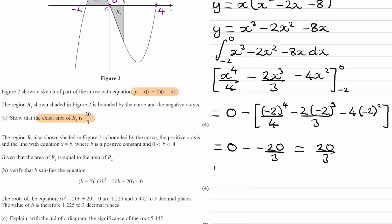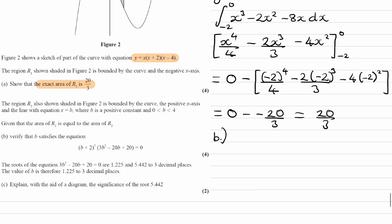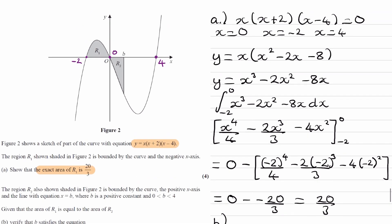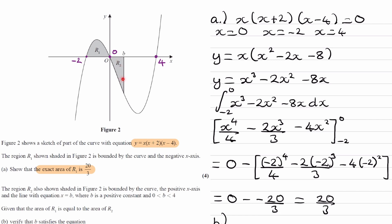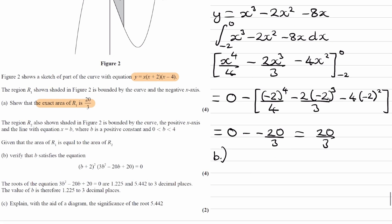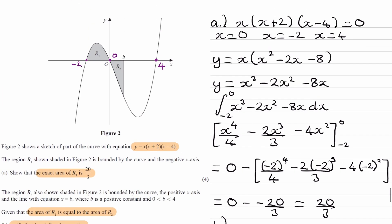Now for part b. The region r2, also shown shaded in figure 2, is bounded by the curve, the positive x-axis, and the line with equation x equals b, where b is a positive constant. We can see that on our diagram, r2 is over here, bounded by the curve, the x-axis, and the line x equals b. We're told the area of r1 equals the area of r2, and hence we want to verify that b satisfies this equation here. Because it says verify, we can use this in our answer. We don't have to arrive at that equation, we can use it in our answer.